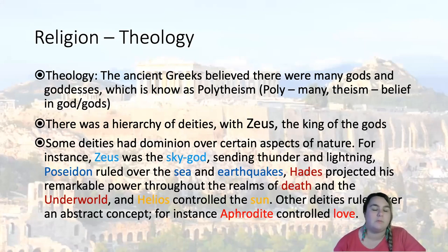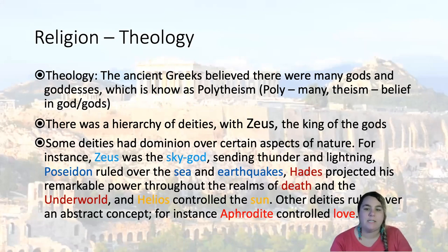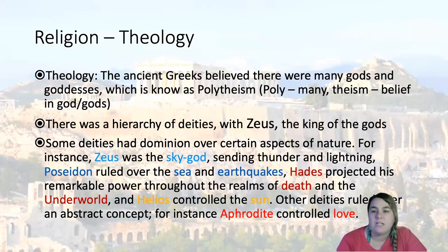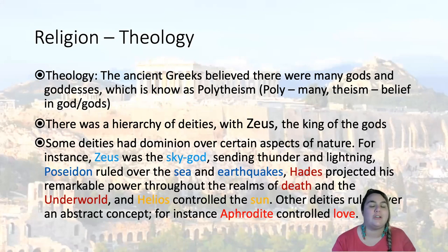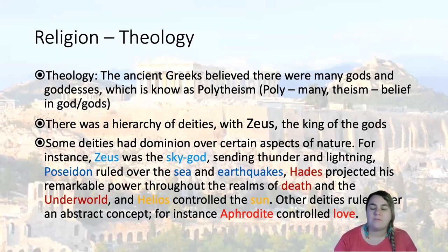The ancient Greeks believed in many gods and goddesses, which is known as polytheism — 'poly' means many, and 'theism' is the belief in god or gods. There was a hierarchy of deities with Zeus as the king of gods. Some deities had dominion over certain aspects of nature: Zeus was the sky god, often represented holding a bolt of lightning. Poseidon ruled over the sea and earthquakes and is often represented with a trident — you can see a nod to that with King Triton in The Little Mermaid. Hades projected his power throughout the realms of death and the underworld, and Helios controlled the sun. Other deities ruled over abstract concepts; for instance, Aphrodite controlled love.